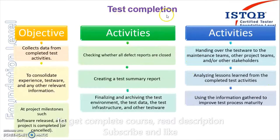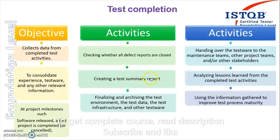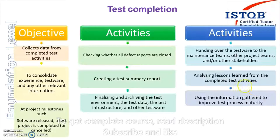So those are the activities in the test completion phase. Let's quickly revise: in this stage we collect the data, consolidate the data, and decide to do a release or perform the tests again. Activities include checking whether all defect reports are closed, preparing the summary report, finalizing and storing everything we used, handing information to the maintenance team and stakeholders as per the contract, analyzing mistakes or new things we learned for future projects or iterations, and gathering information to improve our test process.